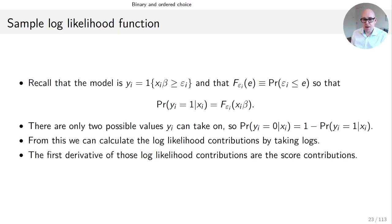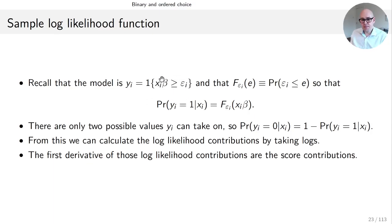The CDF of epsilon_i evaluated at e is the probability that epsilon_i is less than or equal to e. Therefore, the probability that y_i equals one given x is equal to the probability that this condition holds — the probability that epsilon is less than or equal to x_i beta. So once we substitute e with x_i beta, this is just equal to the CDF of epsilon_i evaluated at x_i beta, which is what is written down here.